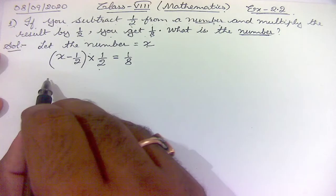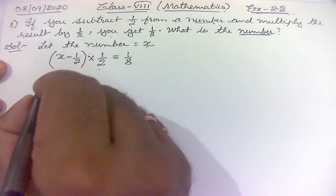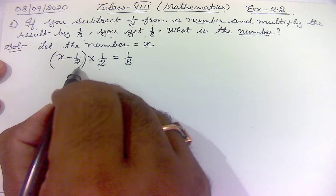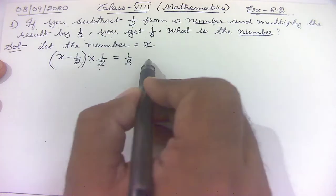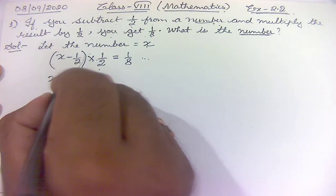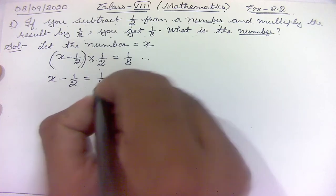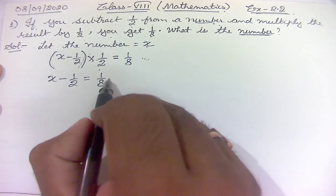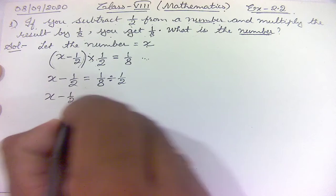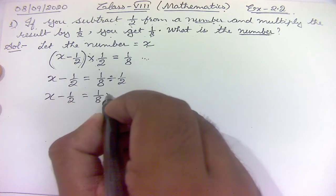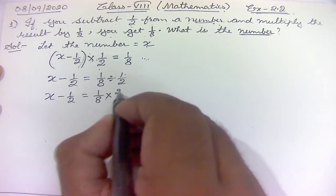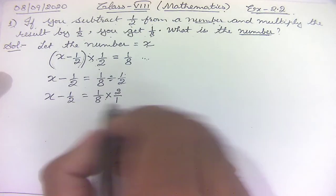Now we solve this equation. The 1/2 being multiplied by the whole bracket (x − 1/2) is transposed to the right-hand side, where multiply becomes divide. So we have x − 1/2 = 1/8 ÷ 1/2. Dividing by 1/2 is the same as multiplying by its reciprocal, which is 2/1.